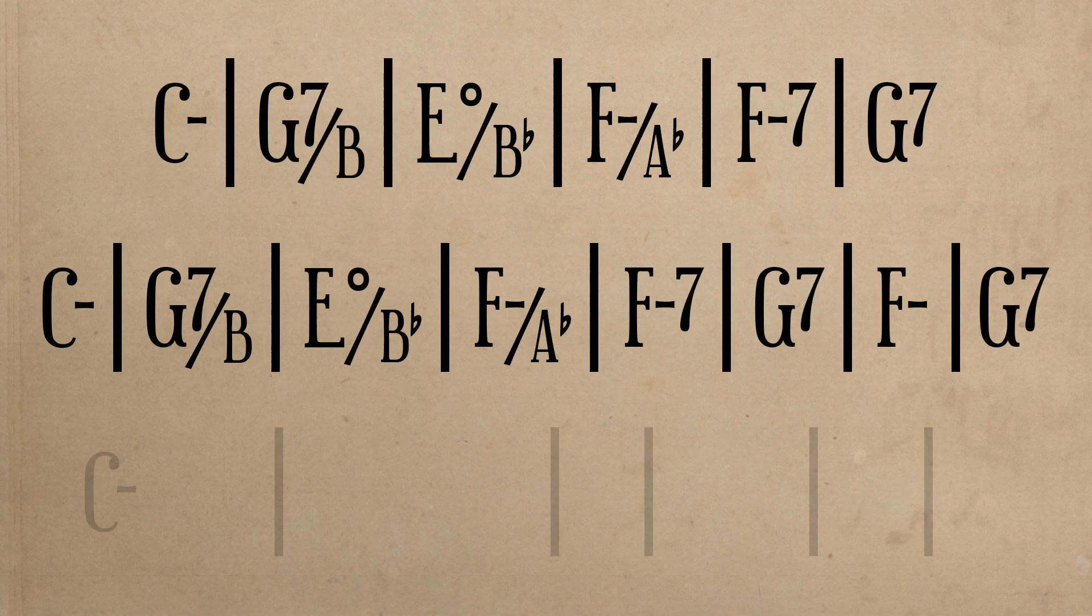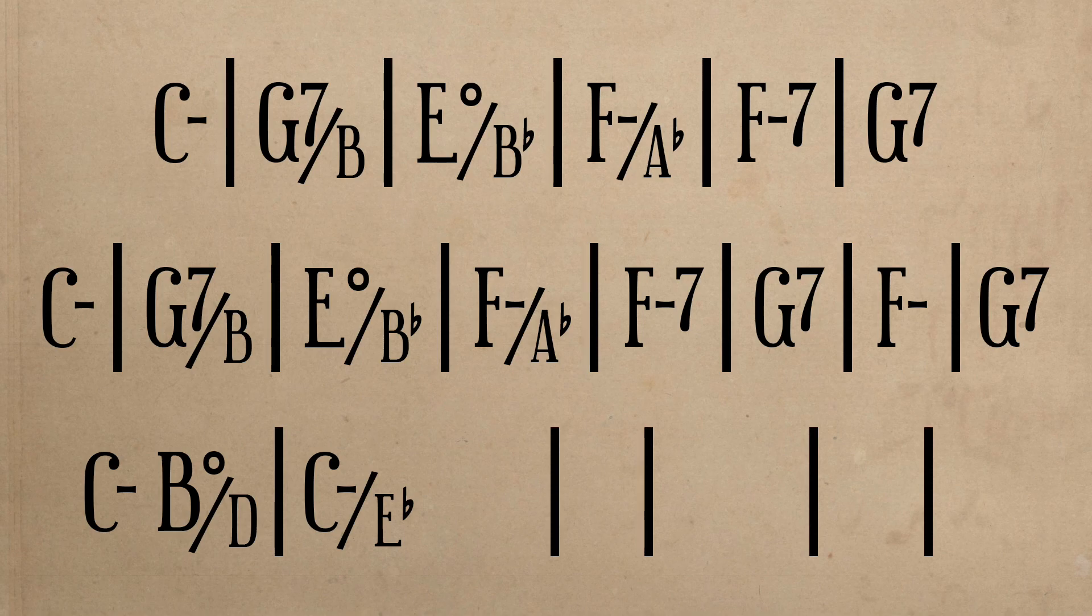In the final phrase, we hear C minor, the 1, B diminished over D, the 7 diminished 6, and C minor over Eb, the 1-6, which then transforms into C7 over E.